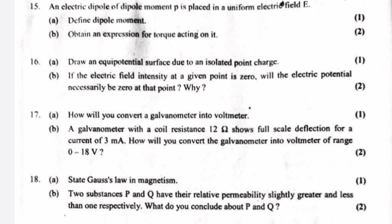Question 17 A: How will you convert a galvanometer into a voltmeter? B. A galvanometer with coil resistance 12 ohms shows full-scale deflection at a current of 3 mA. How will you convert it into a voltmeter of range 0–18 V? Answer A: By connecting a large resistor in series with the galvanometer. Answer B: RG equals 12 ohms, IG equals 3×10⁻³ A, V equals 18 V. R equals V/IG minus RG equals 18/(3×10⁻³) minus 12 equals 5988 ohms. By connecting R equals 5988 ohms in series, it can be converted to a voltmeter.